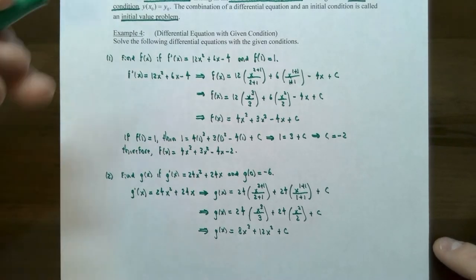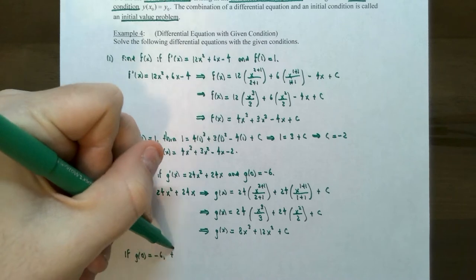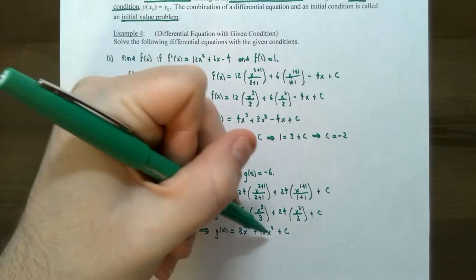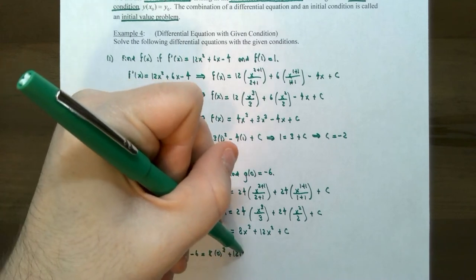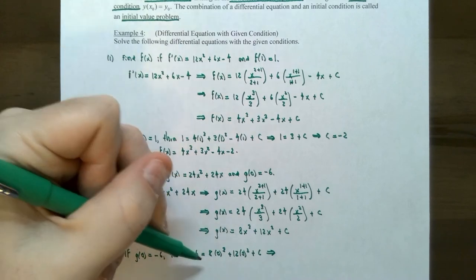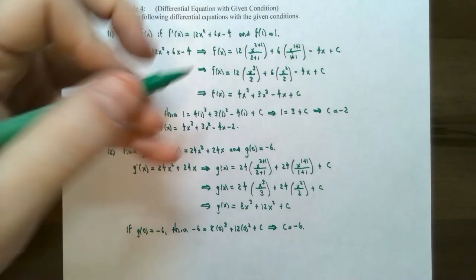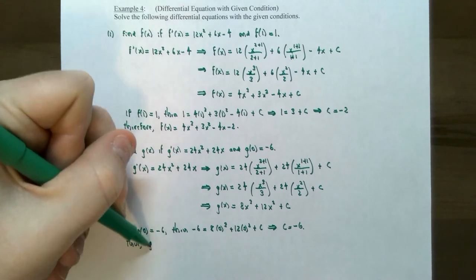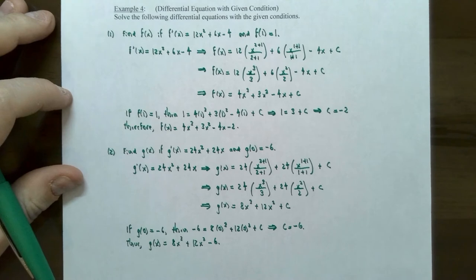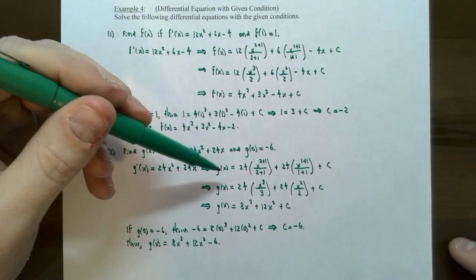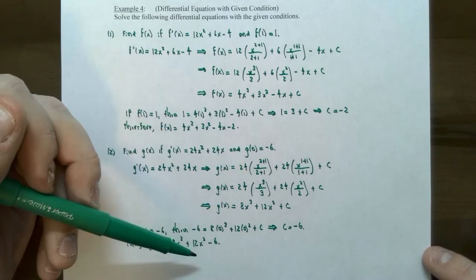Now we find C using the initial condition. If g(0) = −6, replace all x values with 0: −6 = 8(0)³ + 12(0)² + C, so C = −6. Therefore the original function is g(x) = 8x³ + 12x² − 6. This is how you solve a differential equation: find the anti-derivative which gives an arbitrary constant, and if you have a condition you can find the value of that constant.